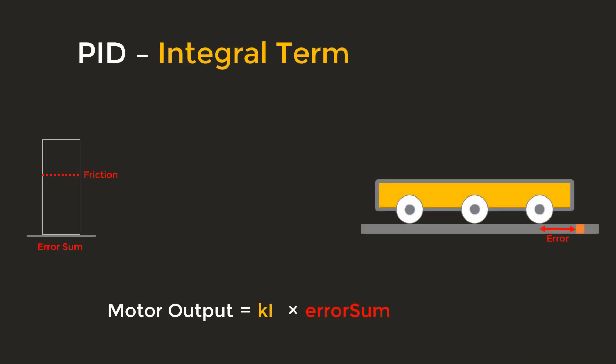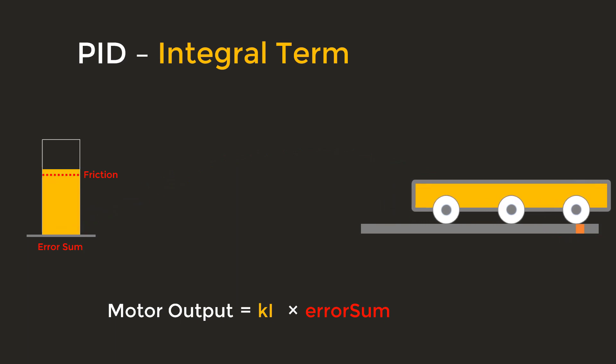To solve this problem, we will introduce the next term, the I term, which stands for integral. Now when we are stuck with that tiny error because of friction, we want to gradually increase the motor output until the robot starts moving again and eliminates the error. We will do this by adding up all the tiny errors over time and using the sum to control the output to the motors. Although the error is small, the sum will increase over time, eventually letting the motors overcome friction.